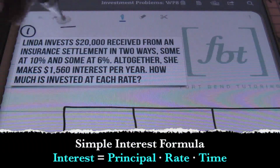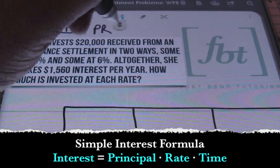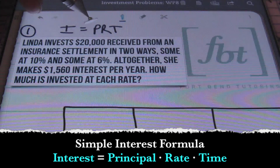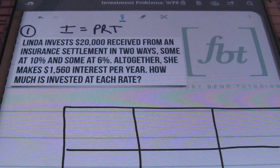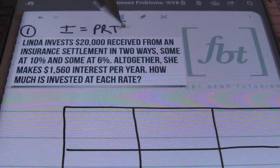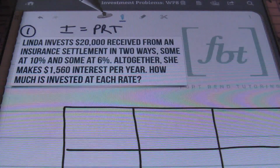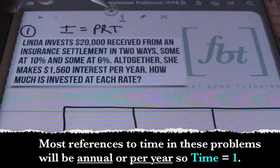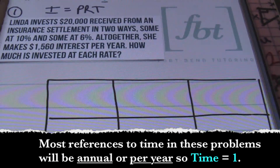We'll be using I equals PRT. I stands for interest, P stands for principal, R stands for the rate, and T stands for time. The time won't be needed in this problem because we're dealing with annual interest — the interest is only compiled once a year. So the T variable won't be an issue in our problems.